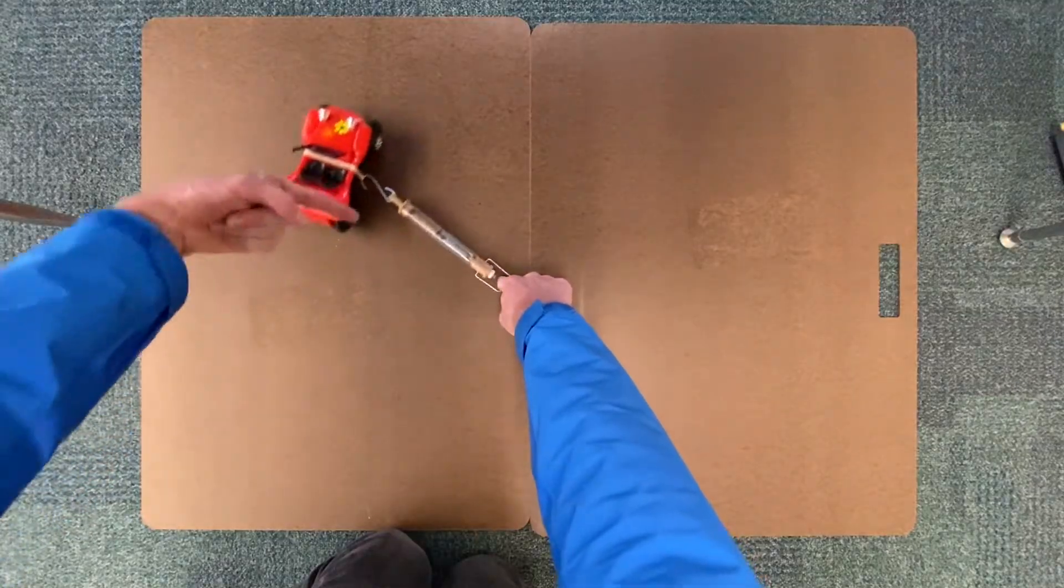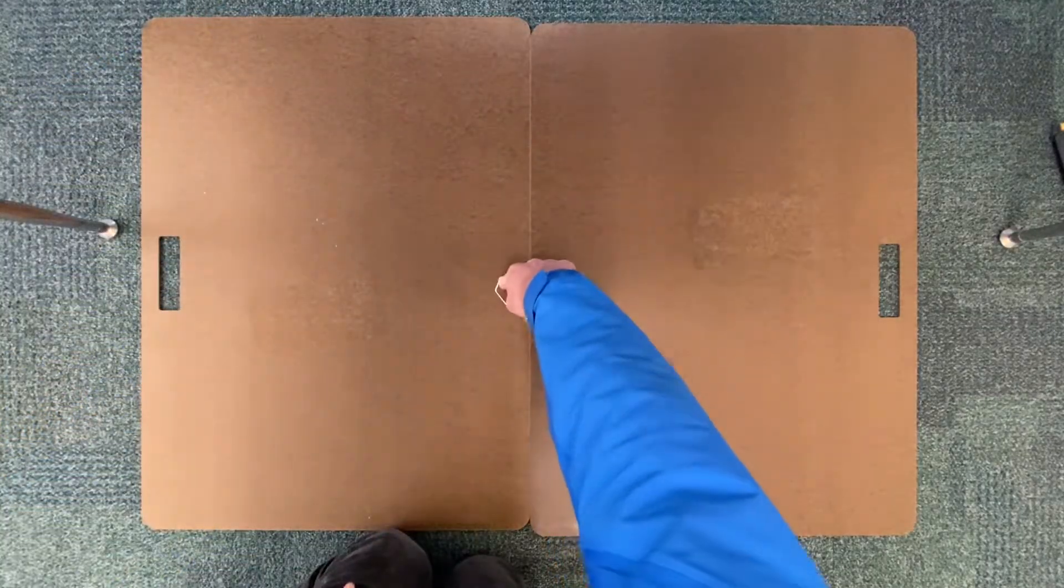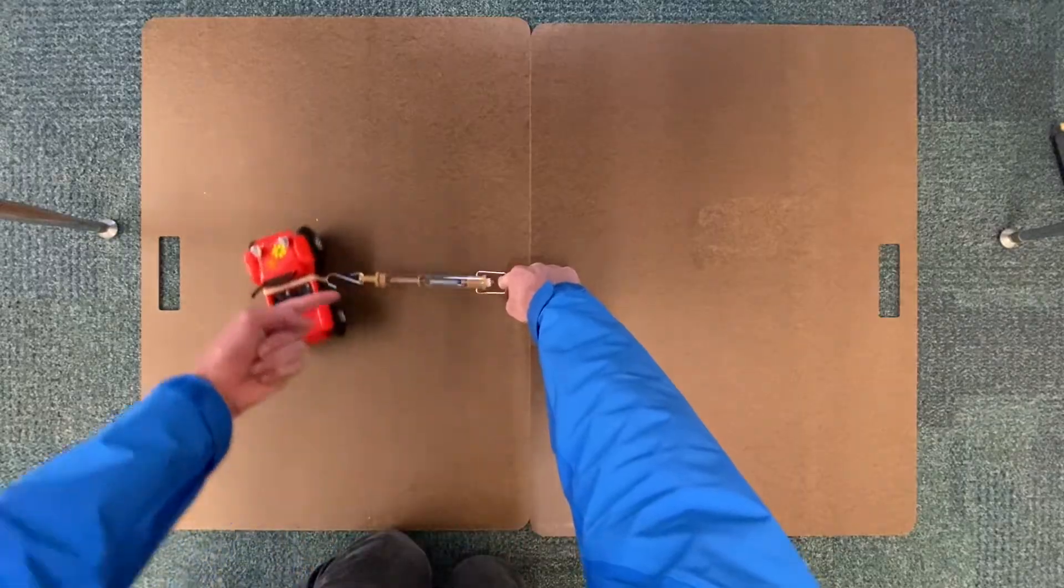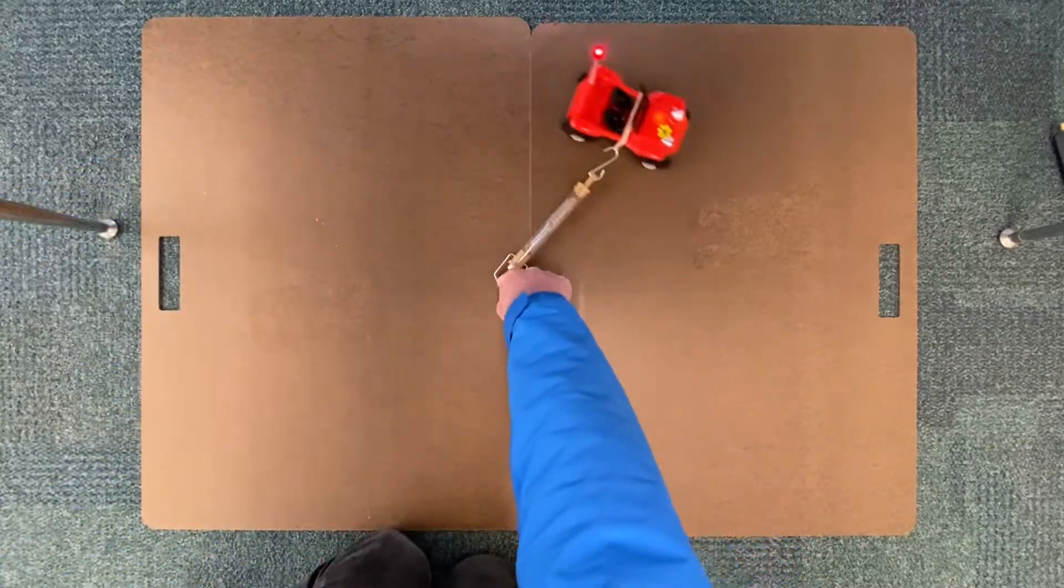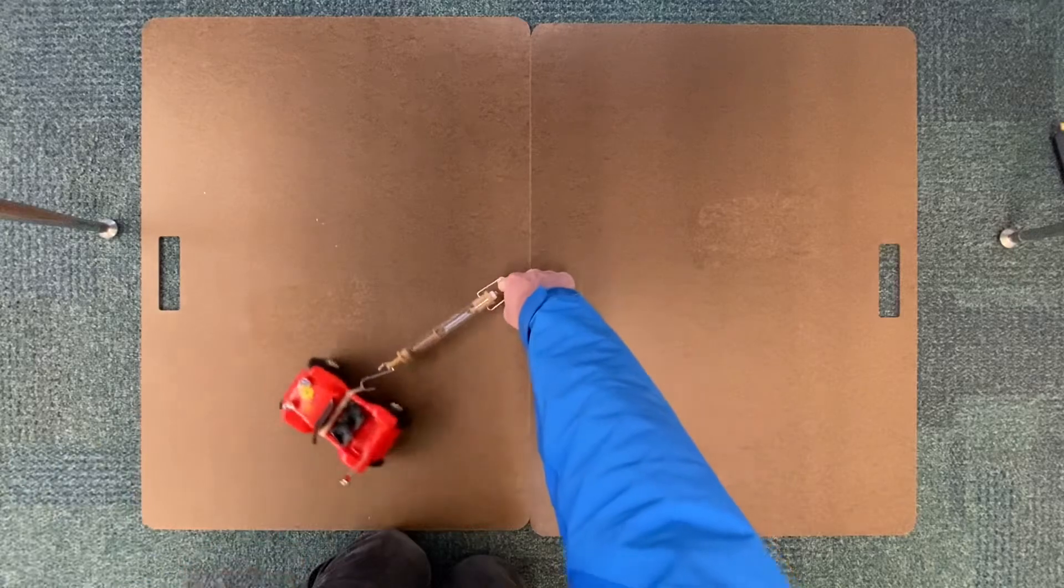That inward pull is called the centripetal force. And in this case that centripetal force is being provided by the force of tension in the spring scale.